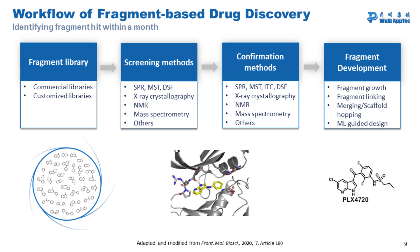Let us take a look at the workflow of fragment-based drug discovery. We can identify a fragment within a month. At the beginning, we need to carefully select fragment libraries, which can be either commercial or customized. We need high-quality, functional protein, so detailed protein QC is very important. Then we use highly sensitive screening methods as mentioned, and we come out with a list of hits which we confirm with various orthogonal methods.